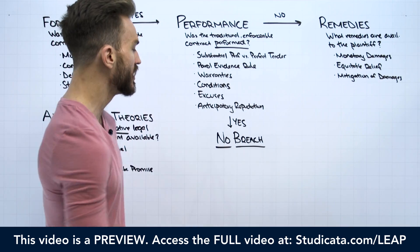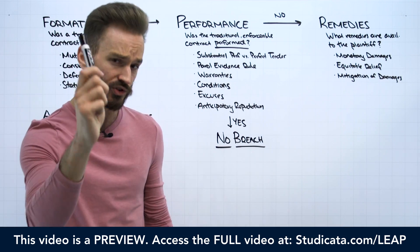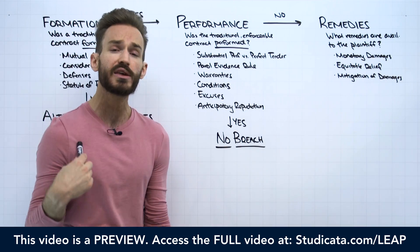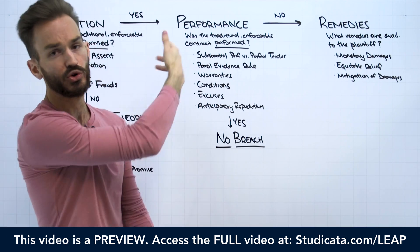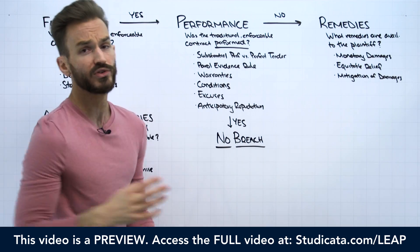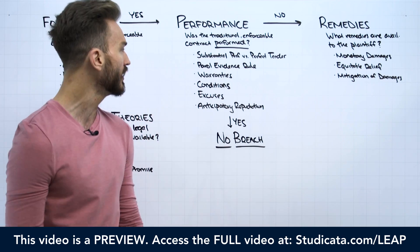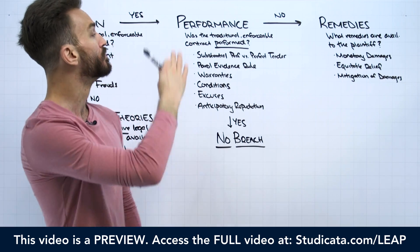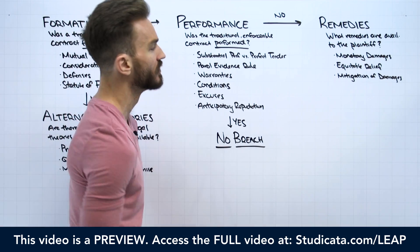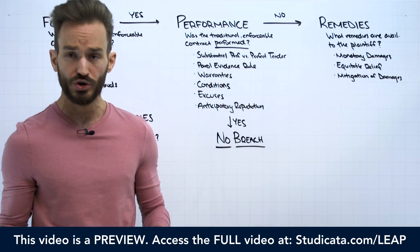If both sides perform, then there's no breach, which means no remedies. So imagine in our example, I offer to sell you this dry erase marker for $5. You accept, I give you the dry erase marker and you give me the $5. We had a traditional enforceable contract — mutual assent, consideration, no defenses that invalidate it, satisfies the statute of frauds. You pay me $5, I give you the dry erase marker. Both sides have performed their duties under the contract. So there's no breach, and no one is entitled to remedies.